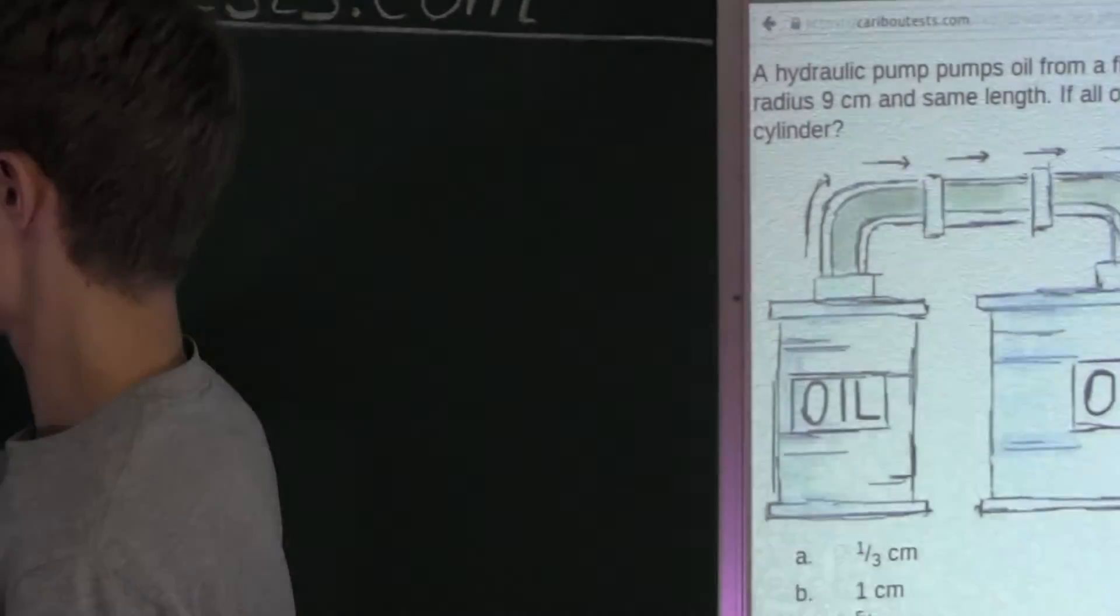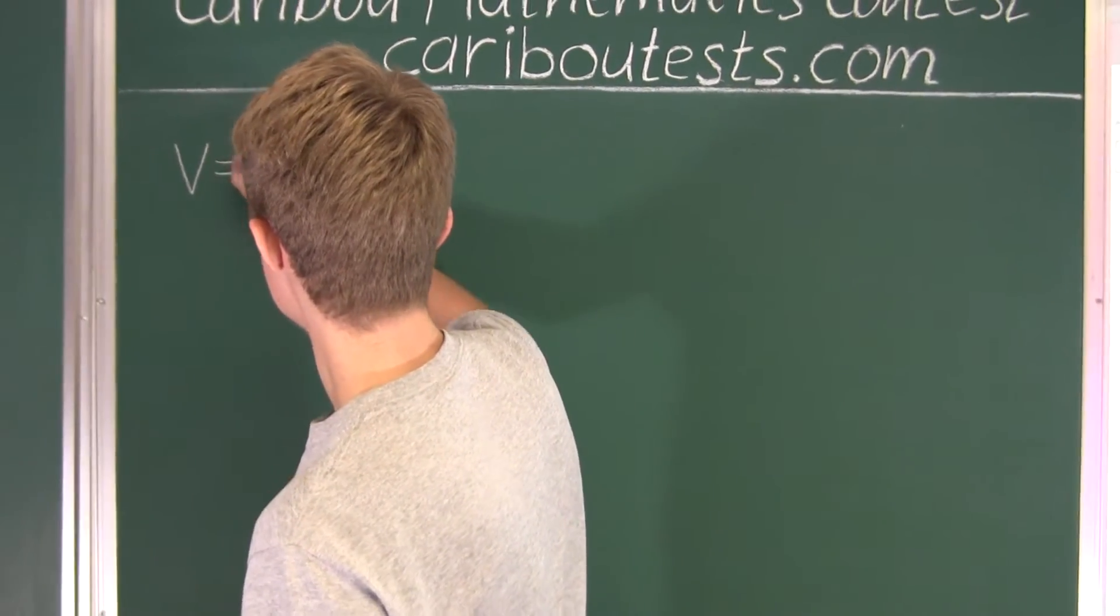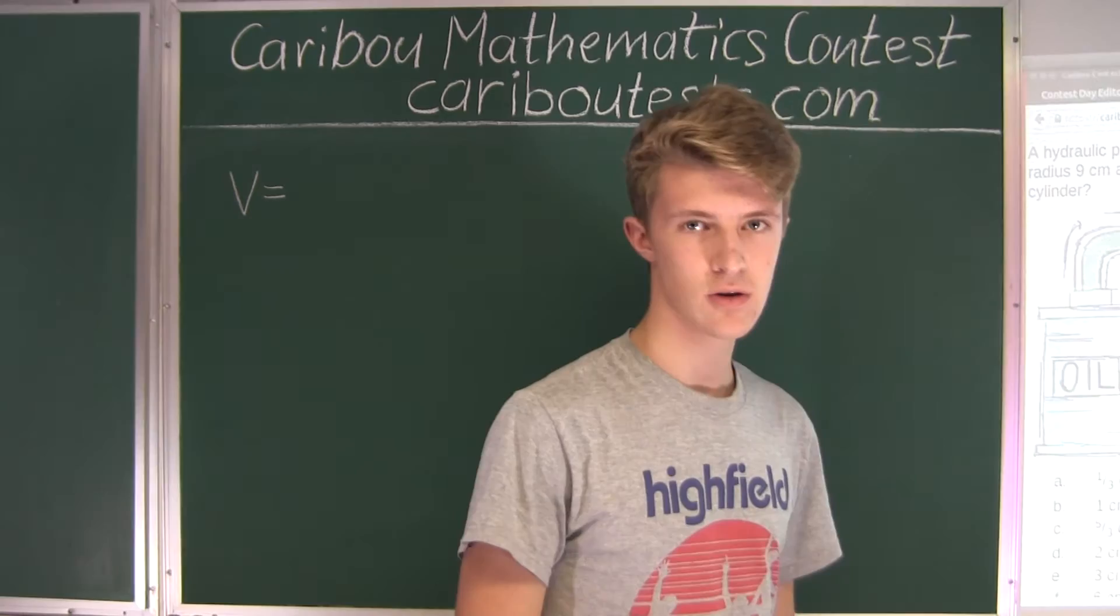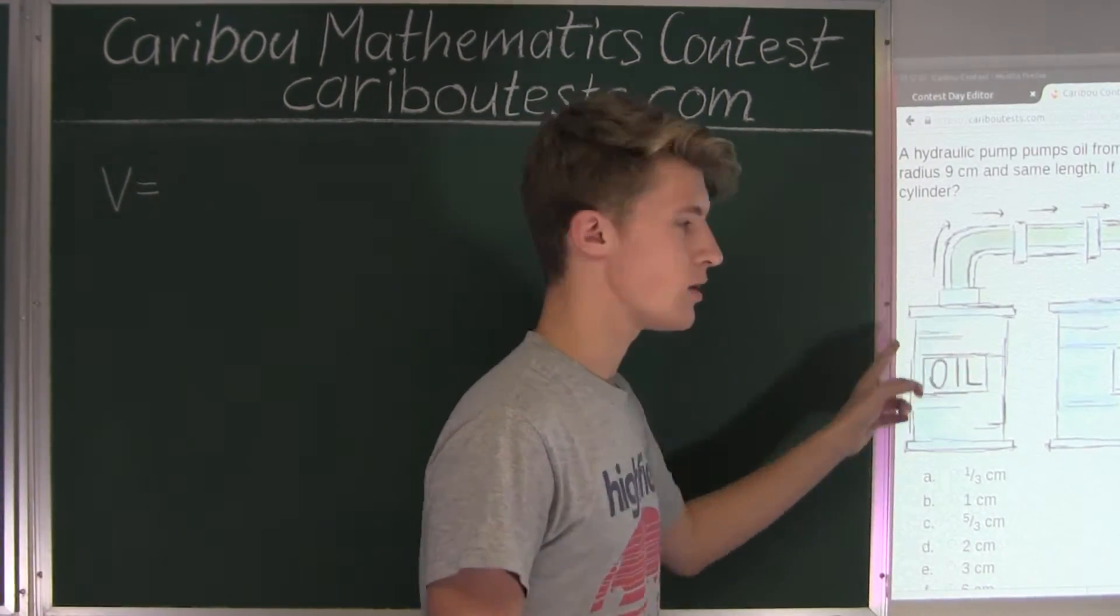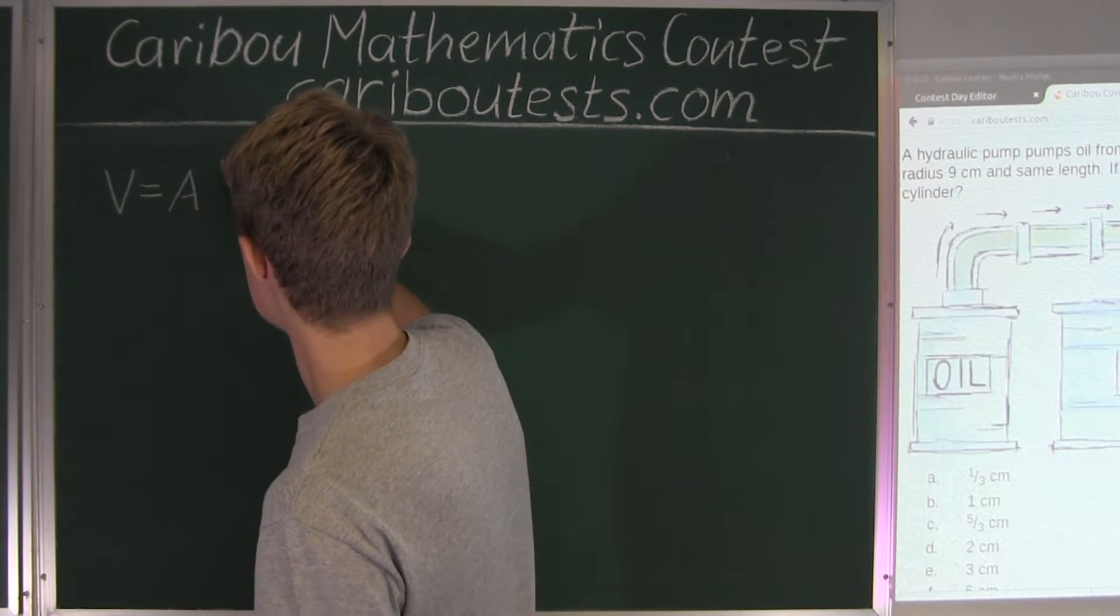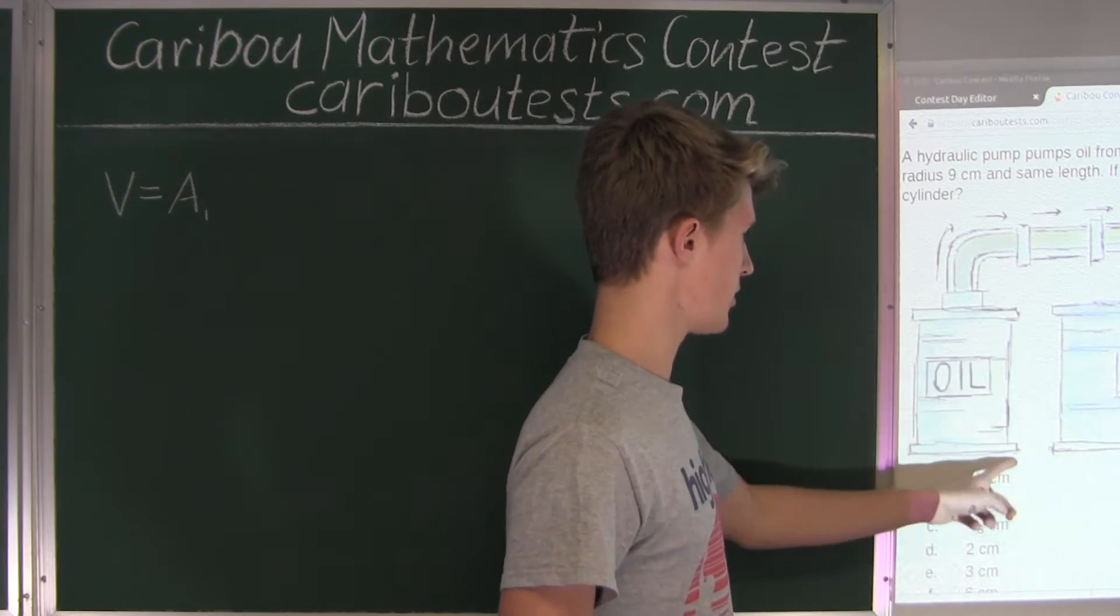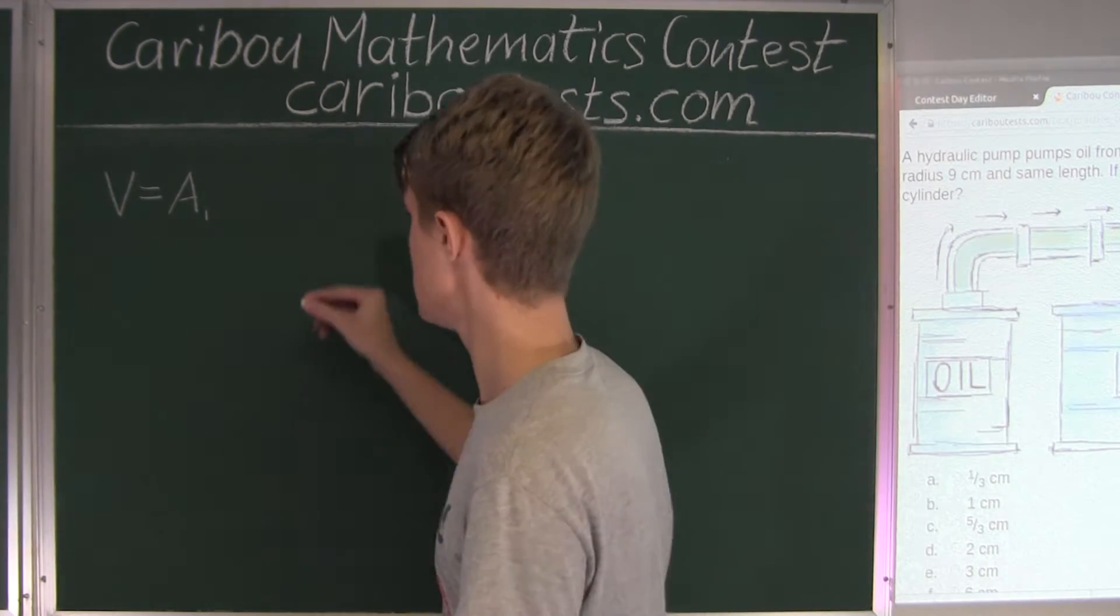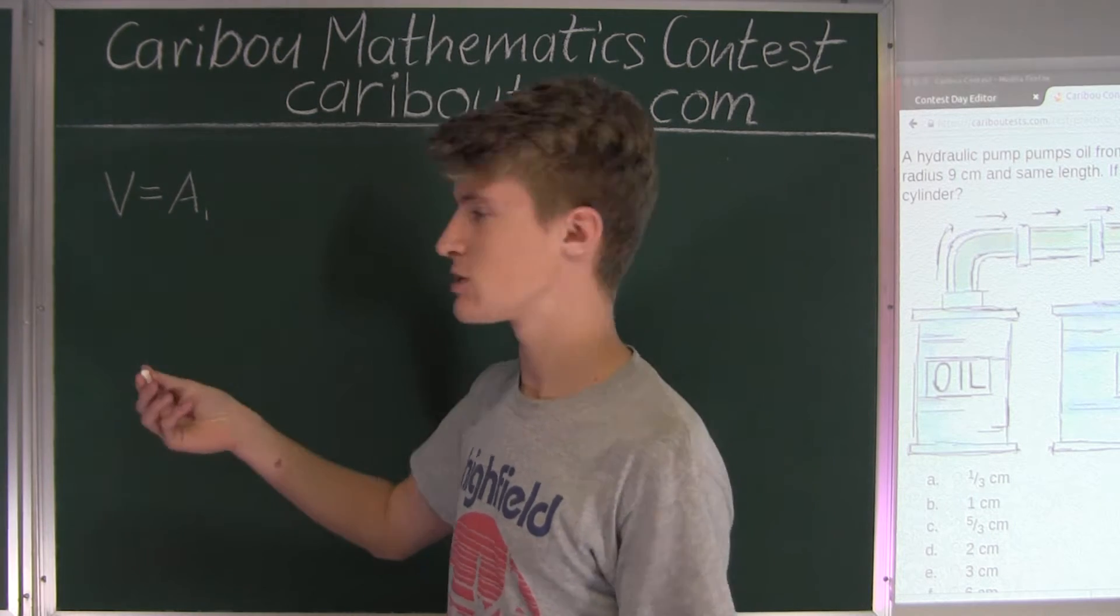So now let's write this down. We have V is equal to, and now we have the area of the circle of the first cylinder, which is here. So we'll call that A₁. And that is multiplied by the length of that cylinder, the first cylinder, which is also the length of both cylinders, so we'll just call that L.